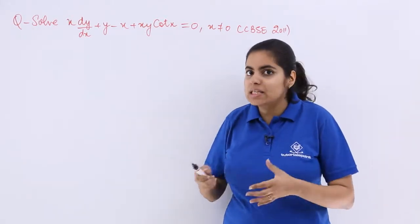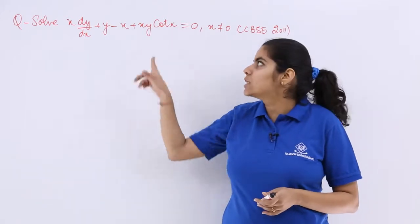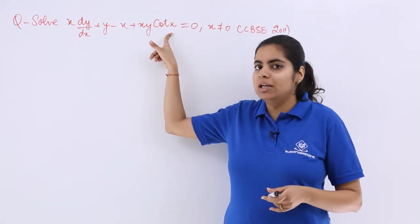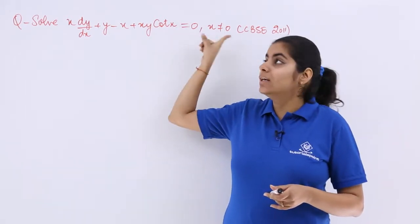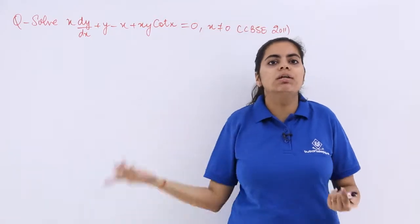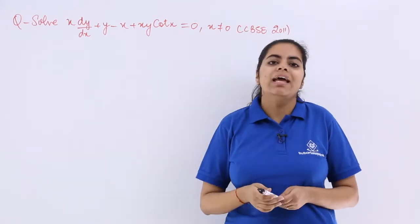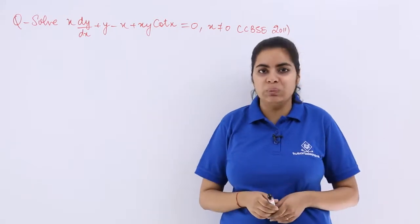Now why x is not equal to 0 is necessary, because cot x means 1 upon tan x, and 1 upon tan 0 means not defined. So that was the reason x not equal to 0 should be included.